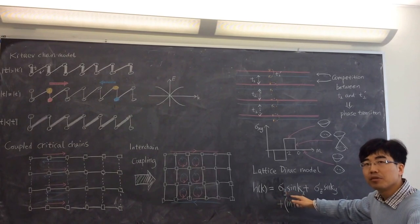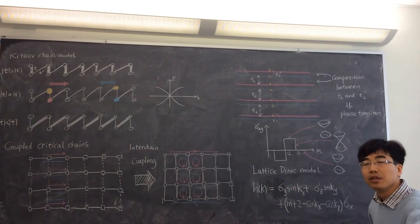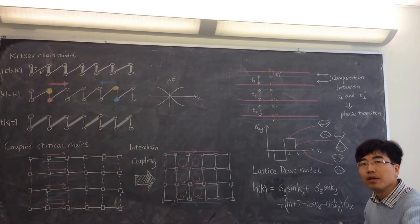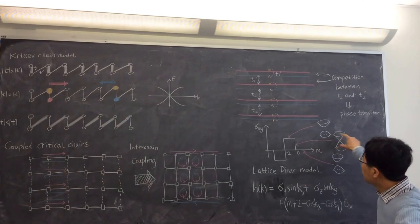You will get a model in the momentum space because it's translation invariant. You get a two-dimensional Hamiltonian, and the Hamiltonian has two bands. There are these two bands here.